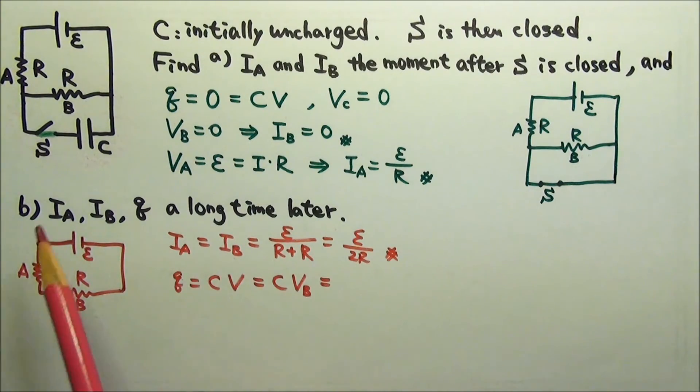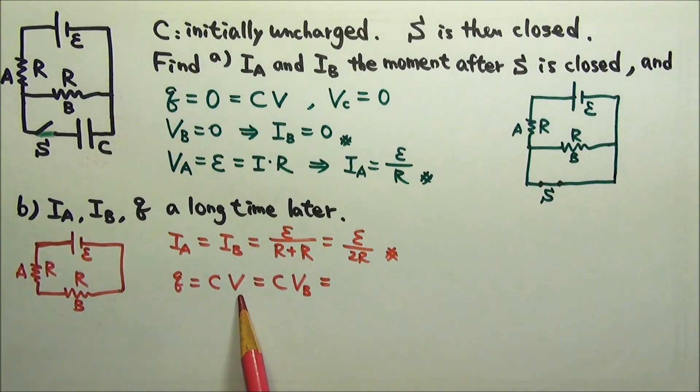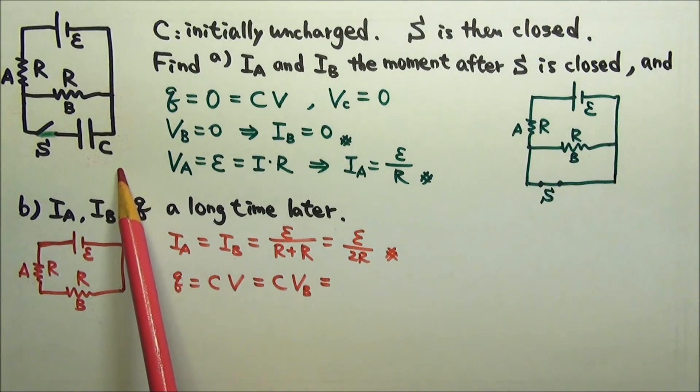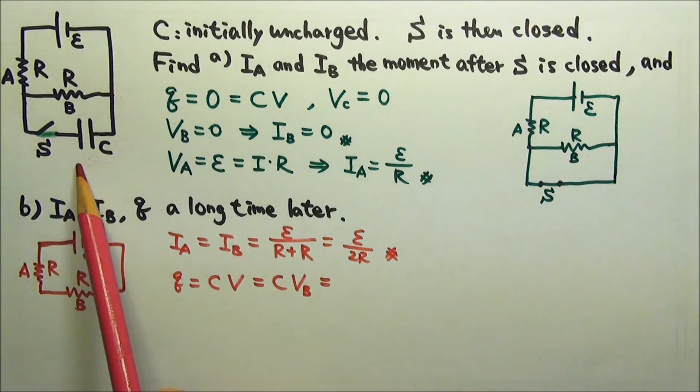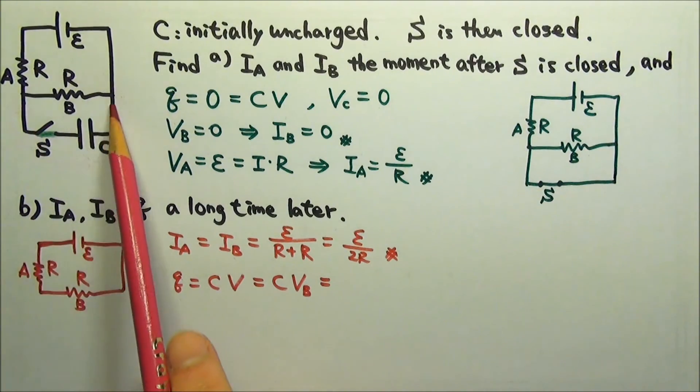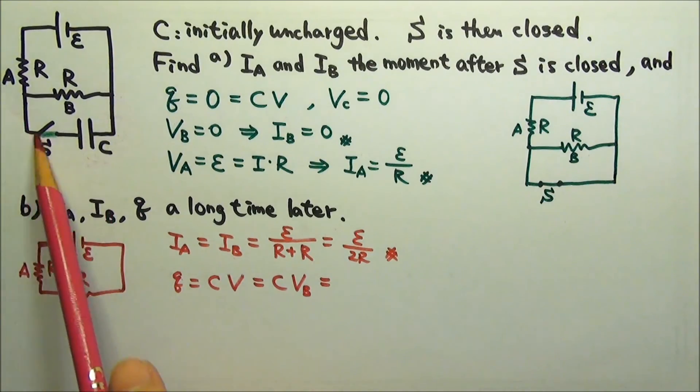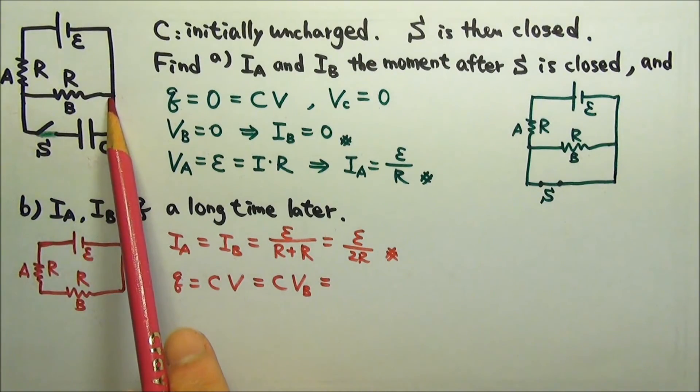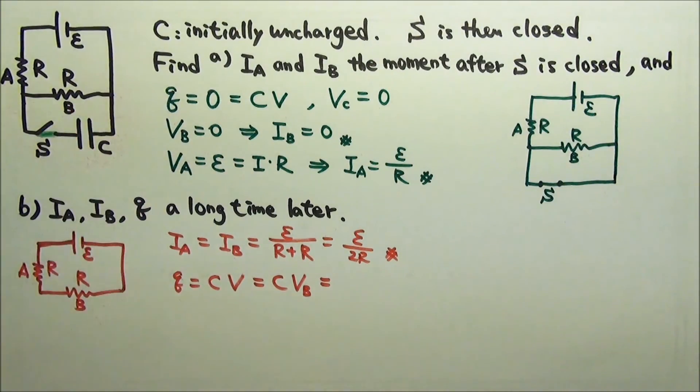To find the charge on the capacitor, we will use Q equals CV. Although cutting the wires here and there won't make any difference, the capacitor is still connected here. Since it is parallel with resistor B, they must have the same voltage.